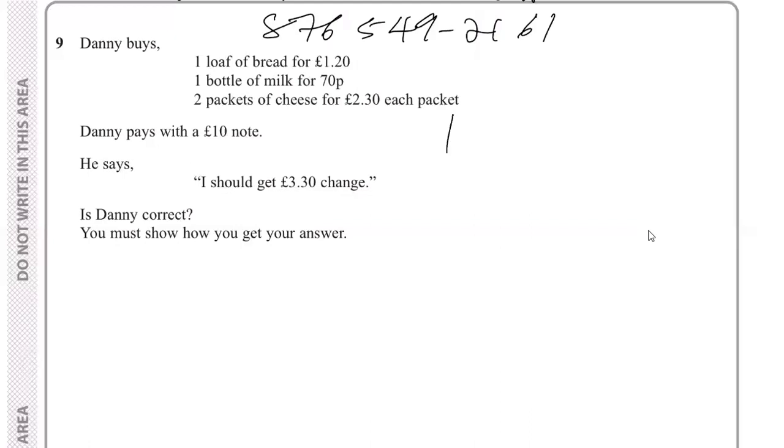So it's 1.20, also one bottle of mint 0.70. Now this one is tricky - we have 2.30 but it's two packets.